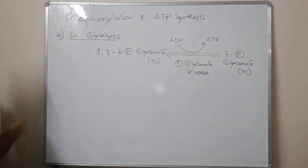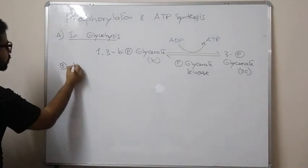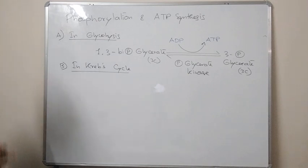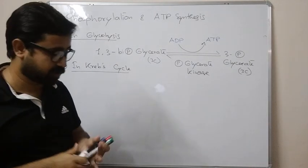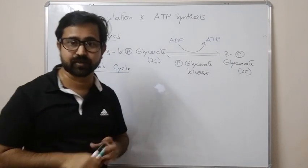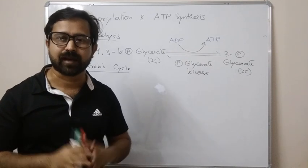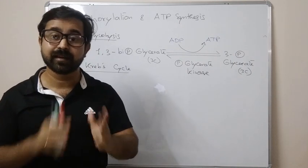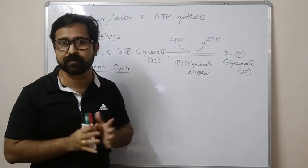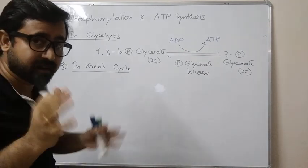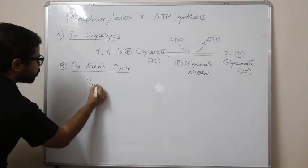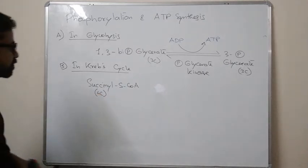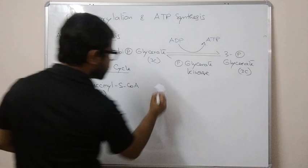Now let's see another example. In the Krebs cycle — also called the crab cycle — there is also a substrate level phosphorylation reaction. On the Facebook page there was a photograph about the Krebs cycle which can serve as your notes. In the Krebs cycle, succinyl-S-coenzyme A, a 4-carbon compound, gets converted into succinate.